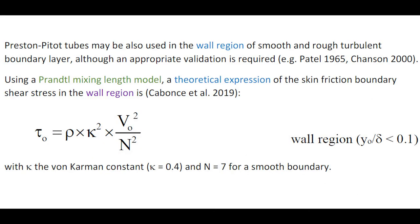Preston tube may also be used in the wall region of smooth and rough turbulent boundary layers. Using a Prandtl mixing length model, a theoretical expression of the skin friction boundary shear stress in the wall region may be derived, with the boundary shear stress proportional to the square of the measured velocity.